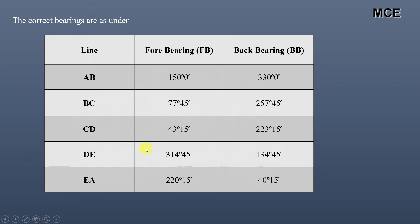This is how you can find the value of local attraction in compass surveying. You just have to find the line for which the difference in fore bearing and back bearing is exactly 180 degrees, meaning the bearings taken from those two stations are correct, and thereafter find the correct fore and back bearings of the other lines. I hope this solution video was clear and effective and you definitely learned something new. If you still have doubts, write them in the comment box. If you found this video helpful, please like, share, and subscribe to my channel. Thanks for watching Master Civil Engineering and stay tuned.